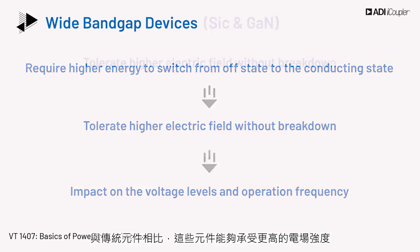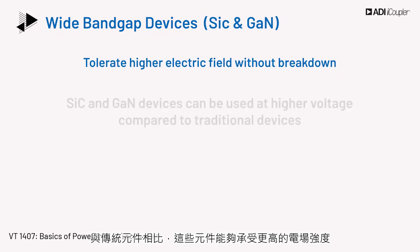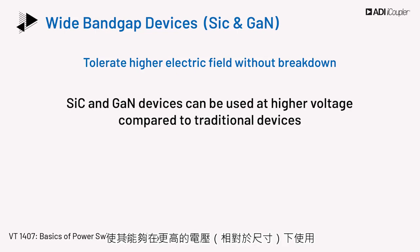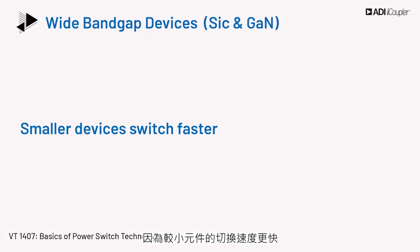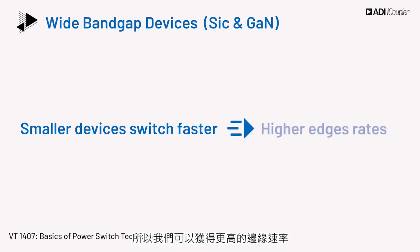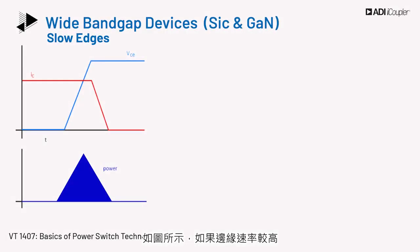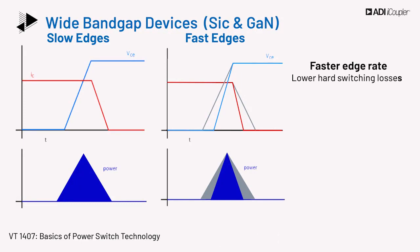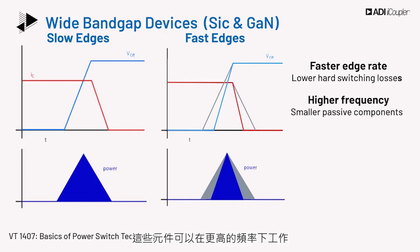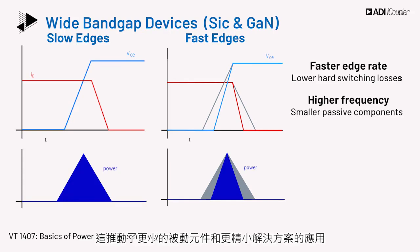Being able to withstand higher electrical field strength allows these devices to be used at higher voltage compared to traditional devices. To get similar blocking voltage, smaller wide bandgap devices can be created. Since smaller devices switch faster, higher edge rates can be obtained. As shown in the diagram, if edge rates are higher, the transition time for voltage and current is lower and hence the switching loss is lower. The devices can be operated at higher frequencies, which leads to the use of smaller passive components and a more compact solution.